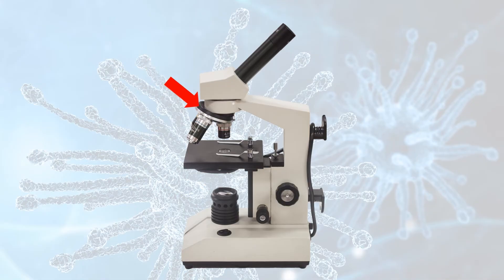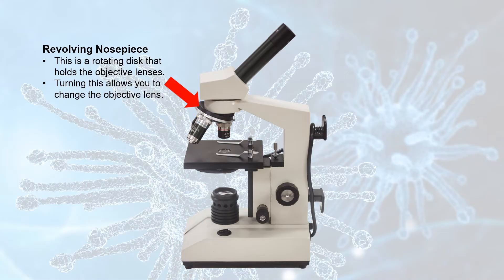This part right here is called the revolving nose piece. It's a rotating disc that holds the objective lenses. You turn it to change from one objective lens to another.